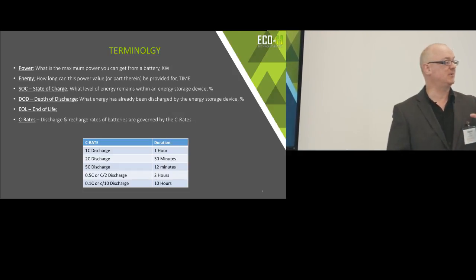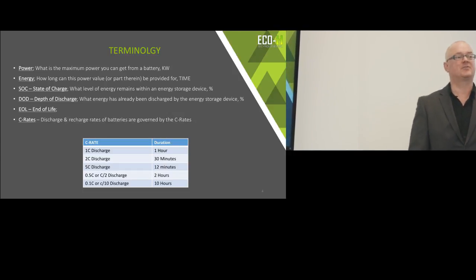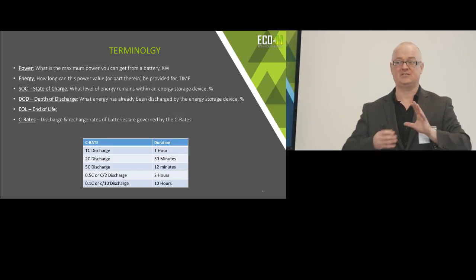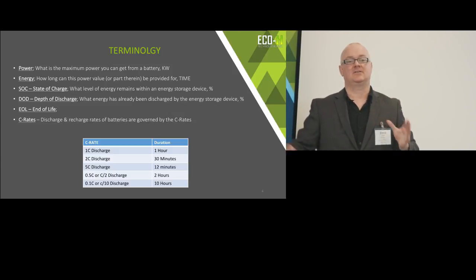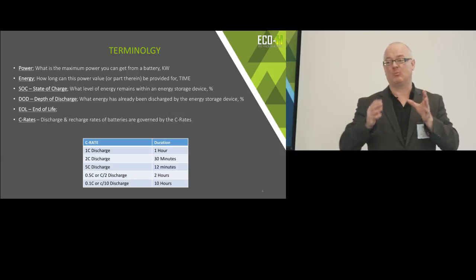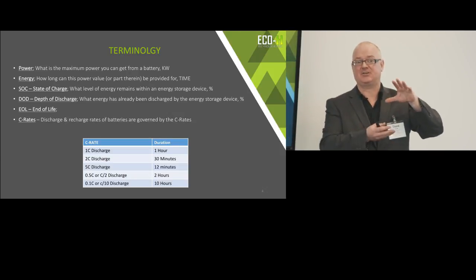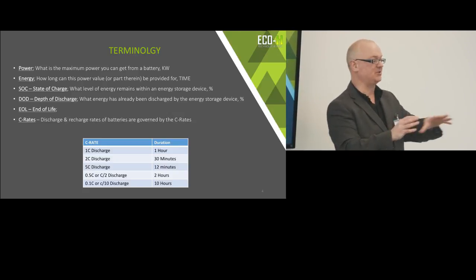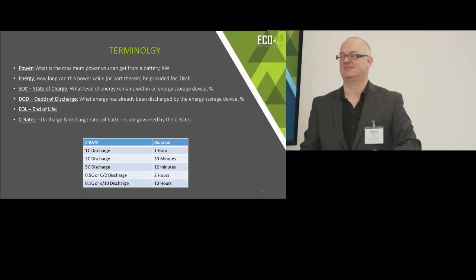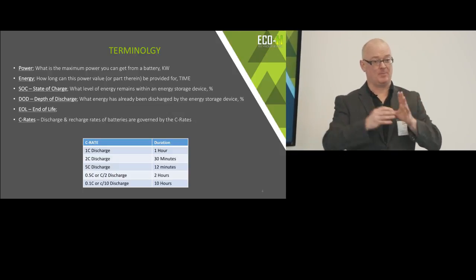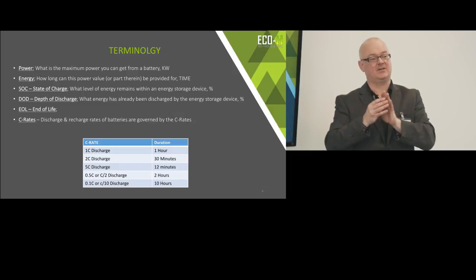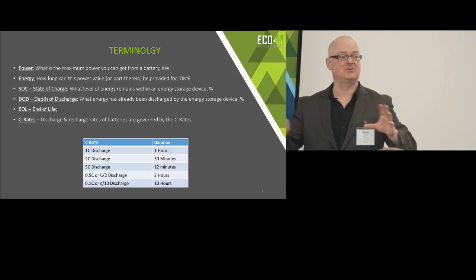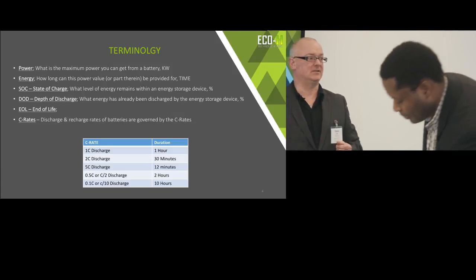Power is kilowatts — it's measured in kilowatts. These lights are a hundred watts. Power is the size of the power that you've got. Energy is the duration you can sustain that power. So if you have a battery that's one megawatt and one megawatt hour, you can draw one megawatt for one hour. It's a very simple linear relationship. If you draw 500 kilowatts, you can draw that for two hours. 250 kilowatts, you can do it for four hours and so on.